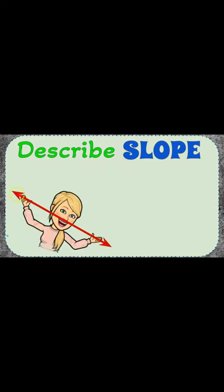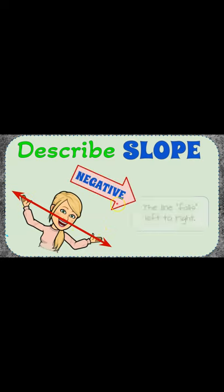If we have a falling line, because you're looking at the graph left to right, then we have a negative slope because the line is falling left to right.